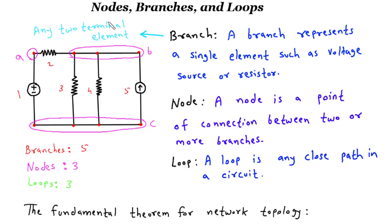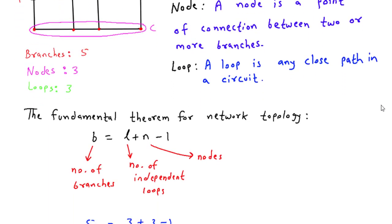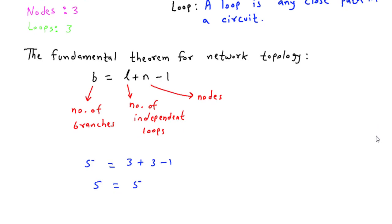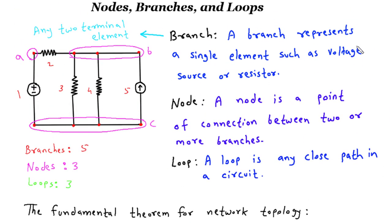Hello everyone. In today's video, we'll be exploring the fundamental elements of an electrical circuit: nodes, branches, and loops. Understanding these concepts is essential for anyone interested in electronics or electrical engineering. We'll also discuss the branch, loop, and node relation equation that helps us analyze the relationship between these elements. So, let's dive in.